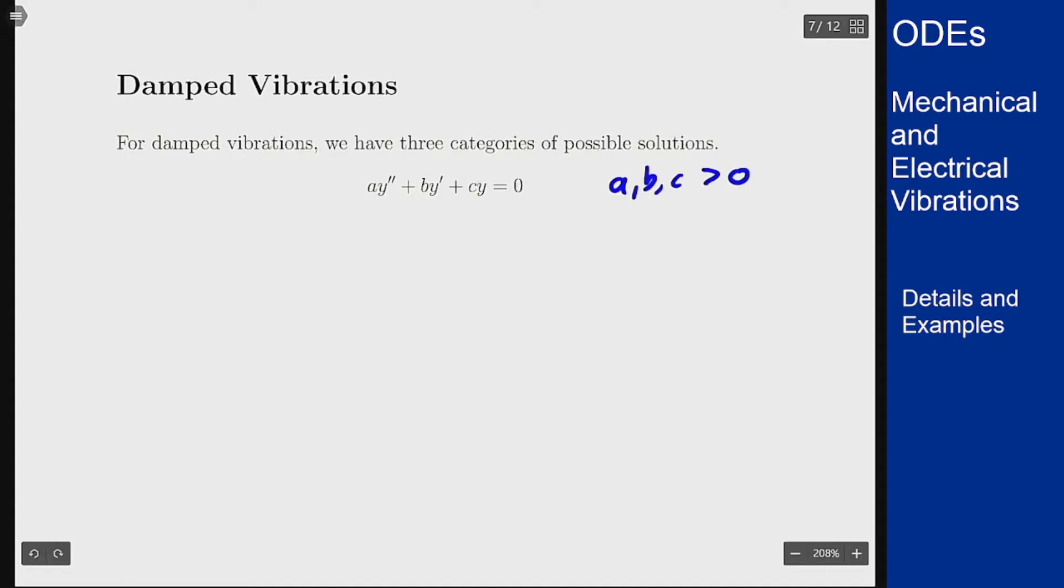And we have three different categories of solutions based on the three different categories of these types of equations. So first we have underdamped, and this occurs when b² - 4ac is negative, or if you think about the amount of damping, it's when b² < 4ac or b < 2√(ac).